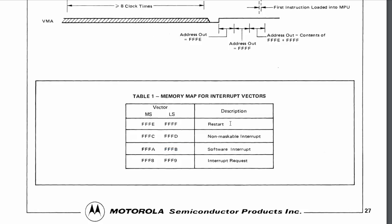Technically you could consider reset kind of like an interrupt, in that it has an interrupt vector at FFFE and FFFF. The difference of course is that when you do a reset, it will immediately take place regardless of where you are in an instruction — if you hit the reset button, it's not going to wait until the end of the instruction. Essentially it's like a power cycle.